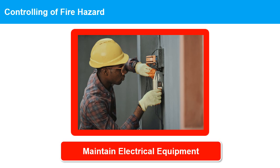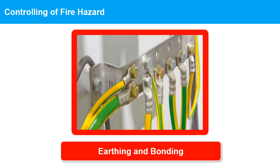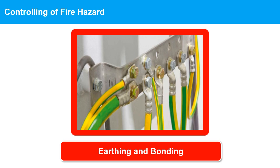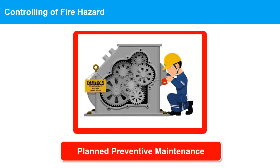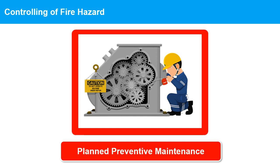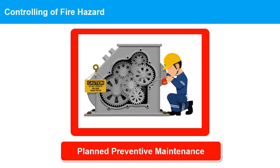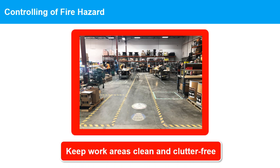5. Maintain electrical equipment: regularly inspect and maintain electrical equipment to ensure they are in good condition and free of damage. 6. Earthing and bonding: proper grounding and bonding of electrical systems and equipment can prevent electrostatic discharges and reduce the risk of electrical fires. 7. Plant preventive maintenance of plant and machinery is essential to control fire hazards in industrial facilities, involving regular inspections, servicing, and repairs to prevent breakdowns, reduce downtime, and extend the lifespan of equipment. 8. Maintain good housekeeping: keep work areas clean and clutter-free to prevent the buildup of flammable materials.